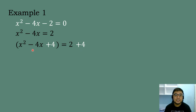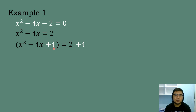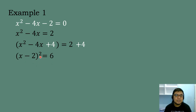We can factor this equation now because it is a perfect square trinomial. To get the factor, take the square root of x squared, which is x, and the square root of the constant term 4, which is 2. Then take the sign of the linear term, which is negative. So the factor is the quantity x minus 2 raised to the second power, and 2 plus 4 equals 6.